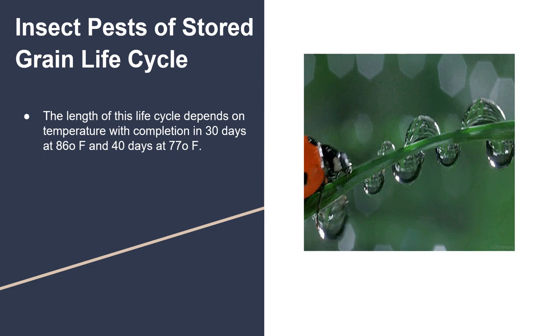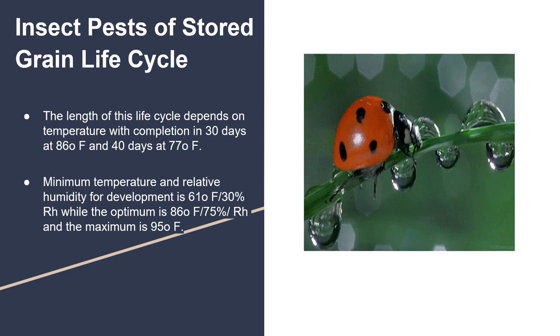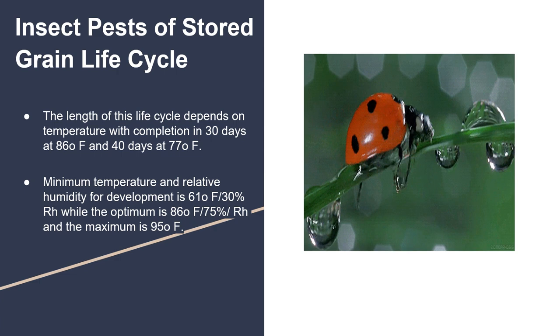Minimum temperature and relative humidity for development is 61°F and 30% RH, while the optimum is 86°F and 75% RH, and the maximum is 95°F.